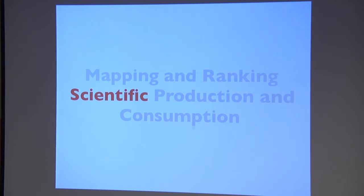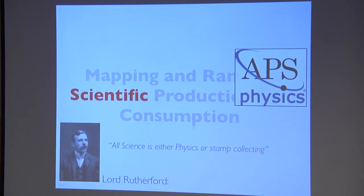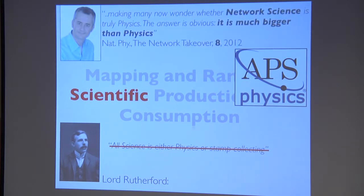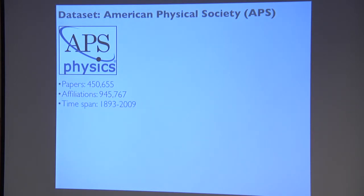By 'scientific' I mean physics here — and yes, there is much more than physics in science, but we know network science is bigger than physics, so 'scientific' seems a proper word. We use the American Physical Society database: it's quite small compared to the ISI Web of Knowledge, but still good. There are half a million papers, one million affiliation strings from 1993 to 2009, and almost five million citations.